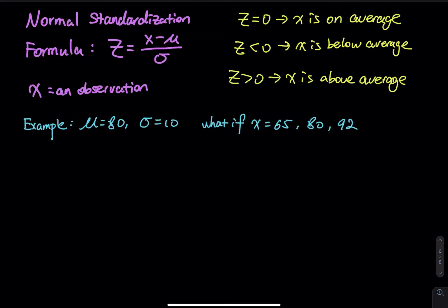In this video, I would like to talk about normal standardization and standard normal distribution. So first of all, for normal standardization, the formula is z equals x minus mu divided by sigma.